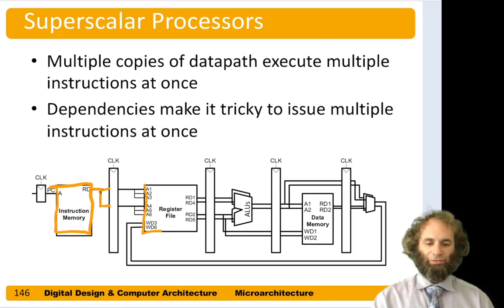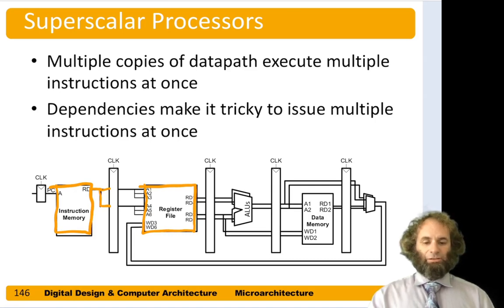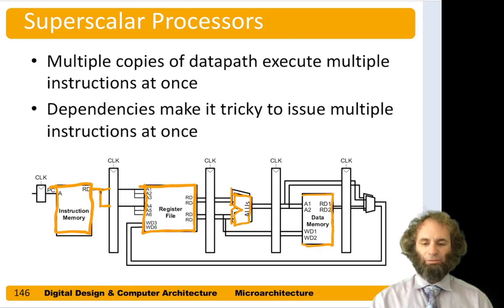Let's say we had a register file with six ports instead of three, so we could fetch the operands for two instructions and write the results from two instructions on each step. Then instead of a single ALU, we'd have two of them to execute two instructions per step, a double-ported memory to read and write two values per cycle, and two result MUXs. Ideally, our superscalar processor could issue and execute two instructions on every cycle.